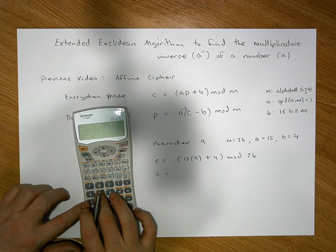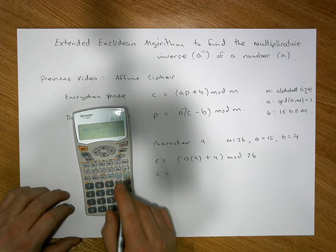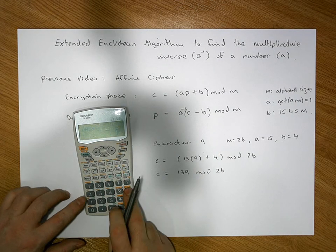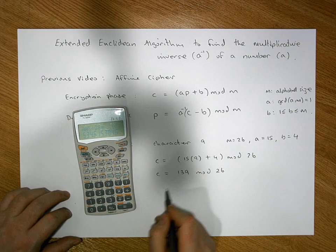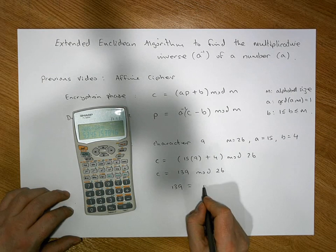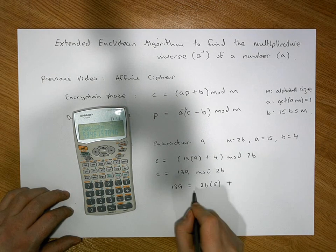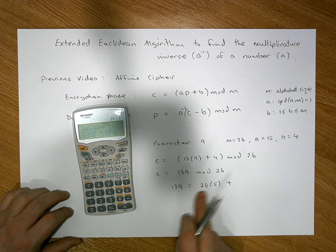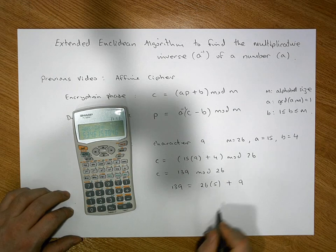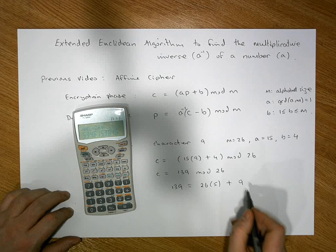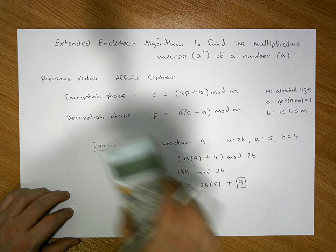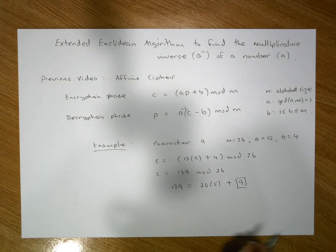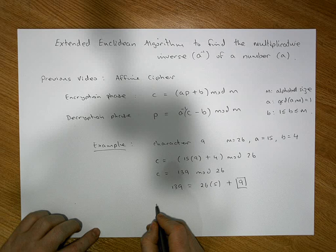So that's 15 times 9 plus 4, which gives 139, modulo 26. Now 26 goes into 139 approximately 5 times, so 139 equals 26 times 5 plus a remainder. That gives 139 minus 130, which is 9. So 139 modulo 26 is equal to 9 — a strange example where the plain text maps to the same cipher text character.